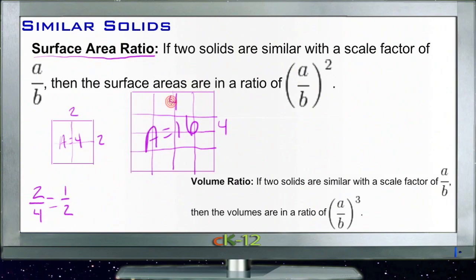That means that although the sides are in a ratio of two to four, the areas are in a ratio of one to four. So the bigger one has an area that's four times as big as the smaller one, even though the sides are only twice as long.